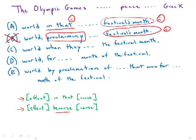When we get to C, we have 'when they,' and the pronoun 'they' is unclear. To whom does 'they' refer? Does it refer to the games? Does it refer to people in the Greek world? It's really unclear what the antecedent of 'they' is. Because there's a pronoun with an unclear antecedent, that is always something that is wrong on the GMAT.